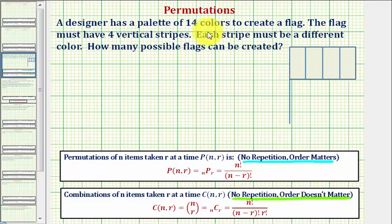So looking at our flag here, let's just say one design looked like this. We want to ask ourselves, if we change the order of these colors, would it produce a different flag? And the answer is yes, and therefore order does matter, and therefore to solve this problem, we want to use a permutation.